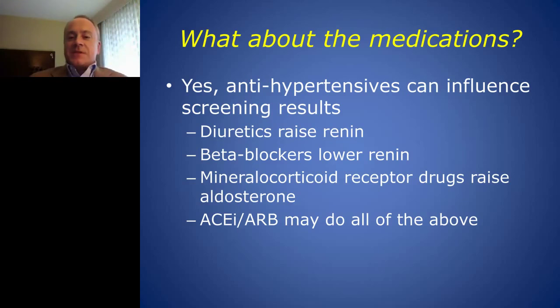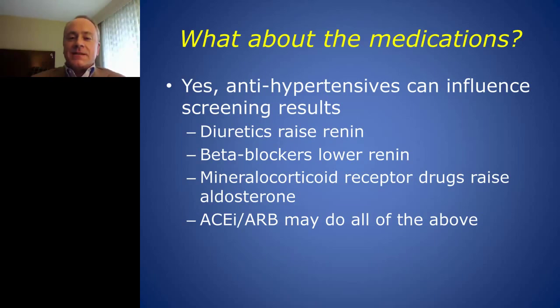The next most common obstacle in deciding whether to obtain an aldosterone-renin ratio is that most antihypertensive medications can influence renin and aldosterone. For example, diuretic blood pressure medications actually raise renin by creating a diuresis or dehydration effect which lowers blood volume and stimulates renin. Beta blockers suppress renin secretion through sympathetic stimulation. Mineralocorticoid receptor drugs such as spironolactone block the mineralocorticoid receptor, causing aldosterone levels to be very high. ACE inhibitors and ARBs can do all of the above.